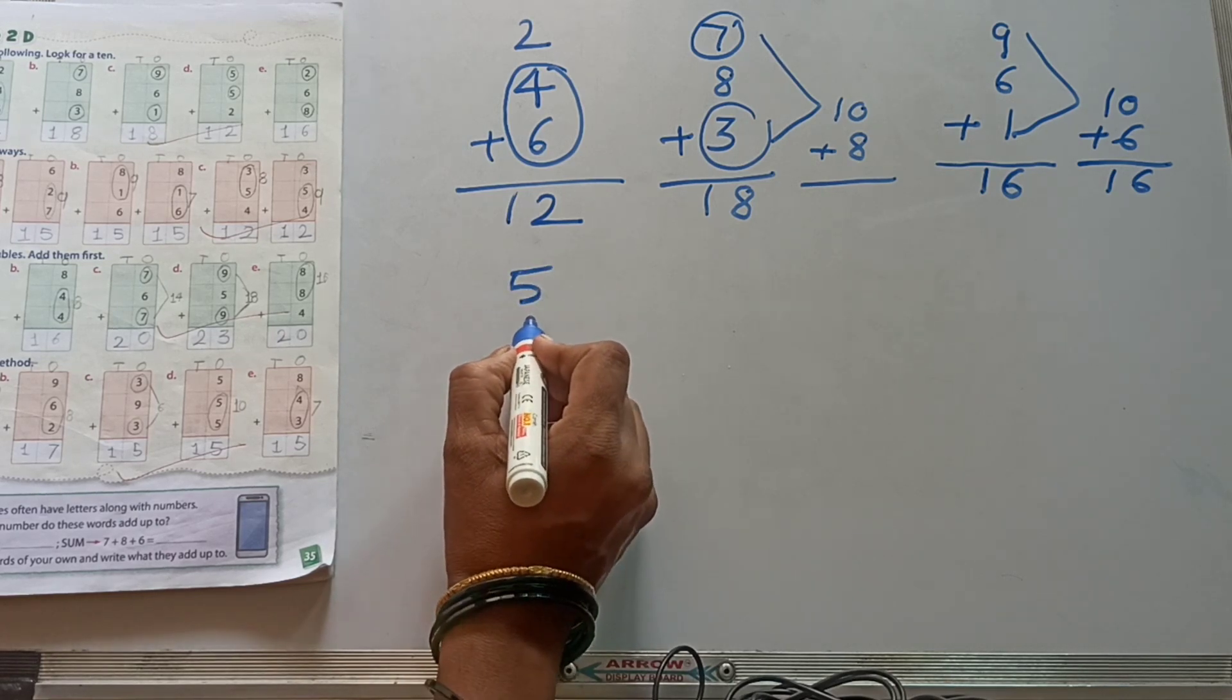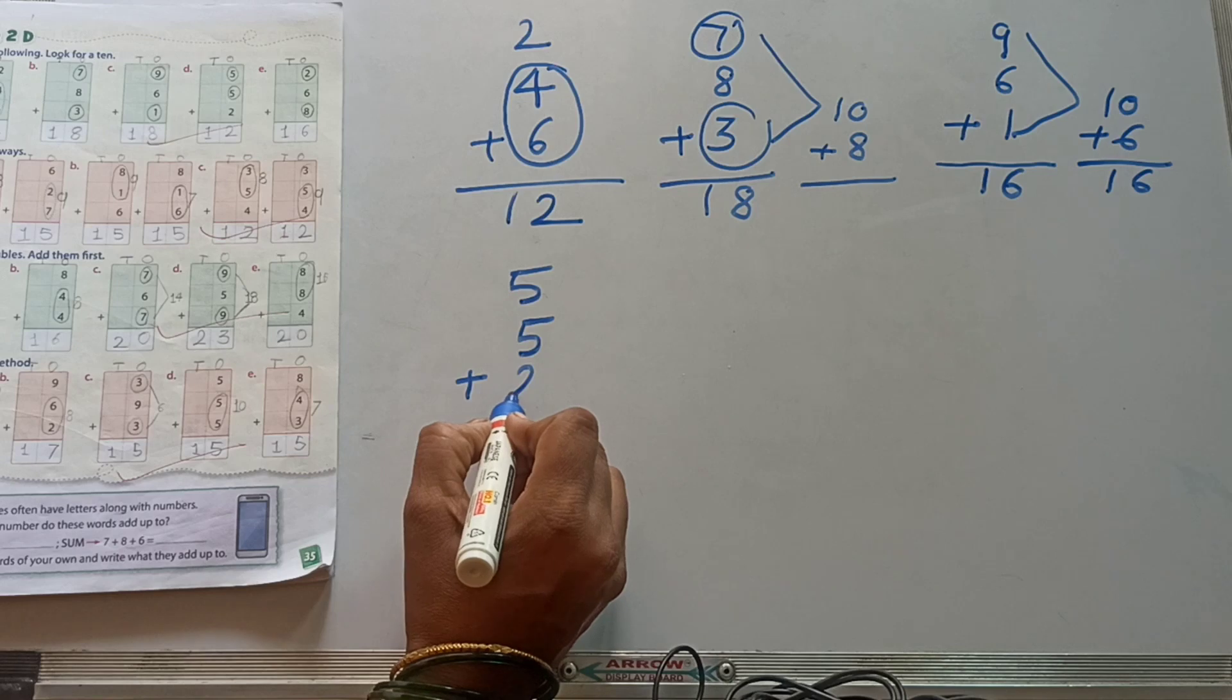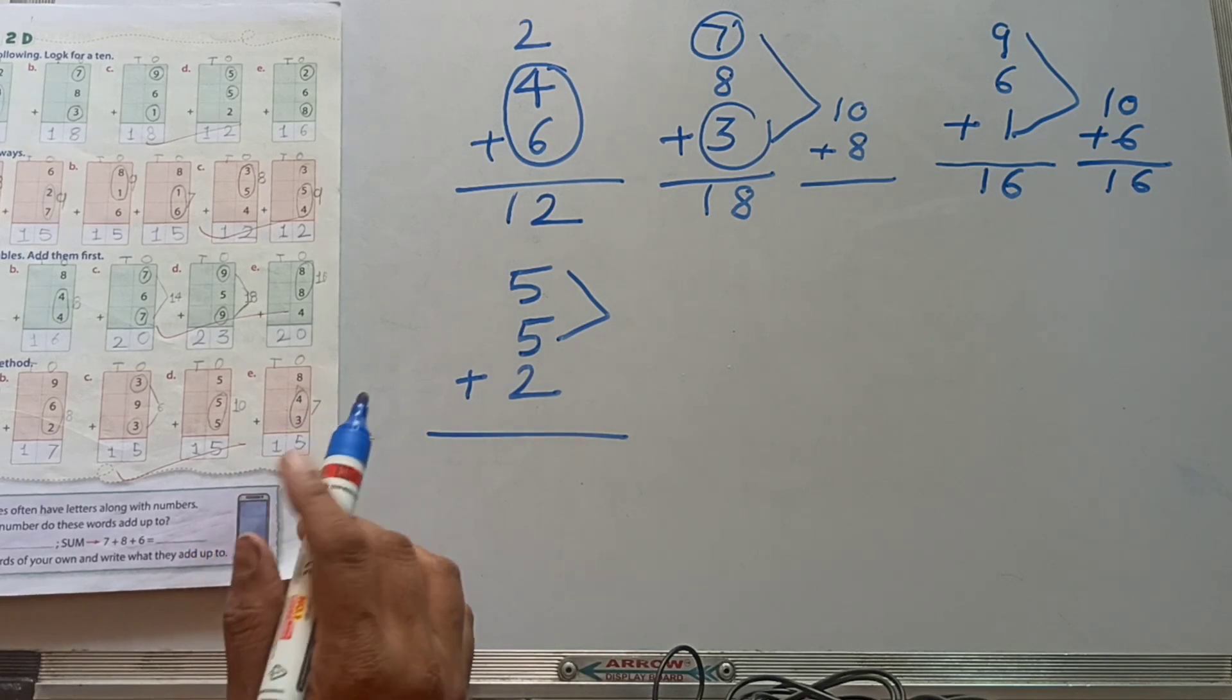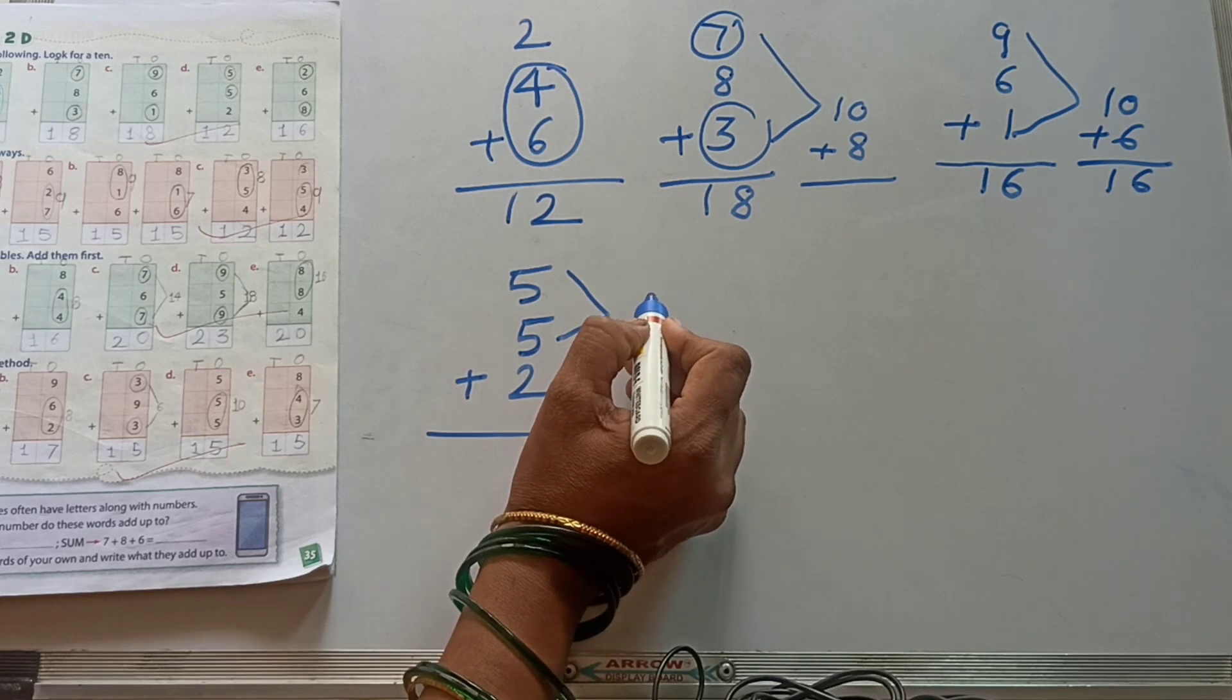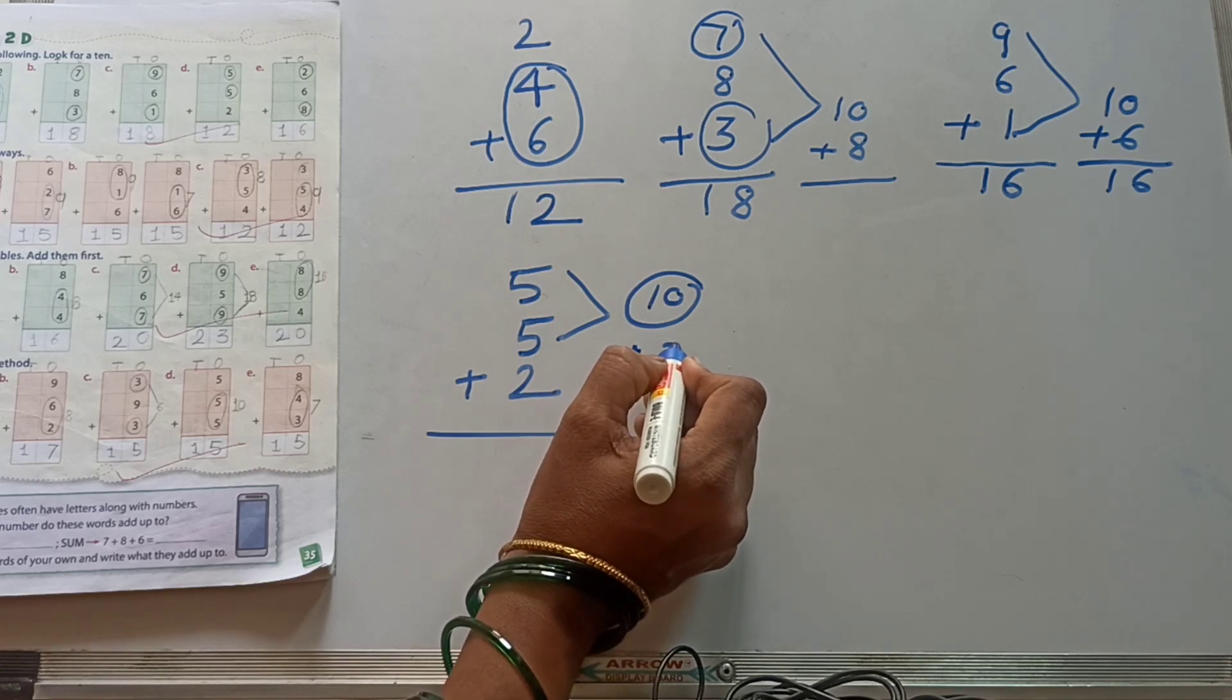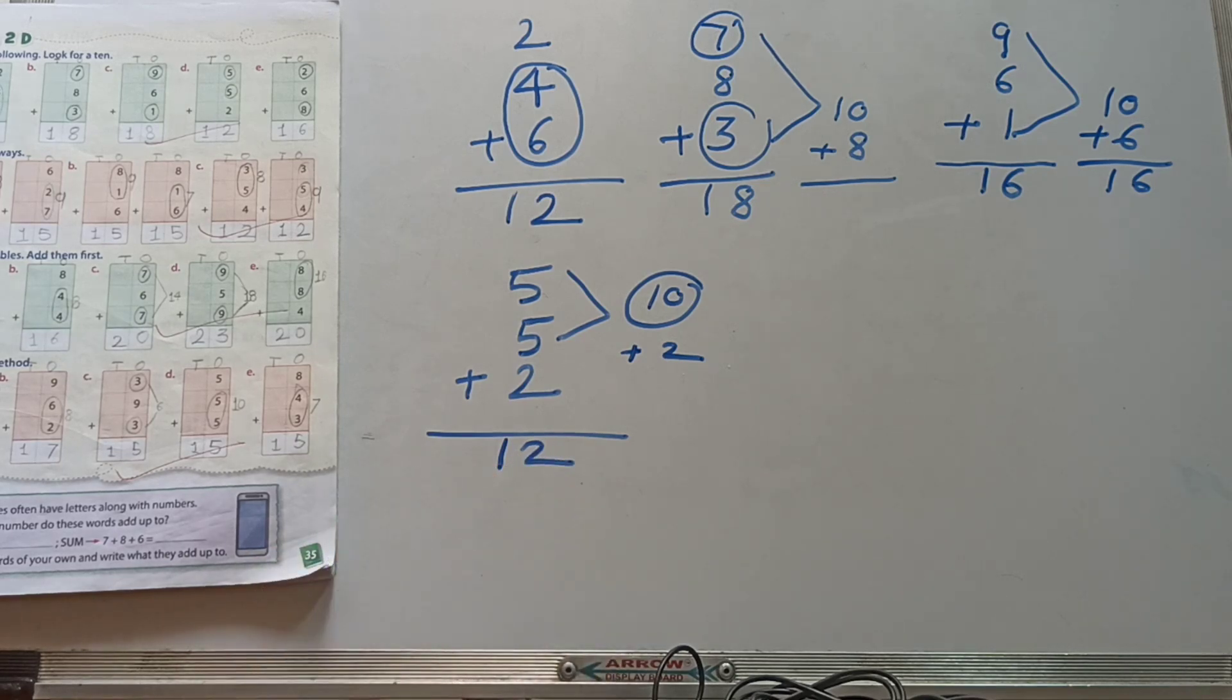Next, 5 plus 5 plus 2. This one, first two numbers are same. 5, 5 is 10, or 5 twos are 10. We've got 10 number. 10 plus this one, 2. 12. Write here, 12. We've got our answer, 12.